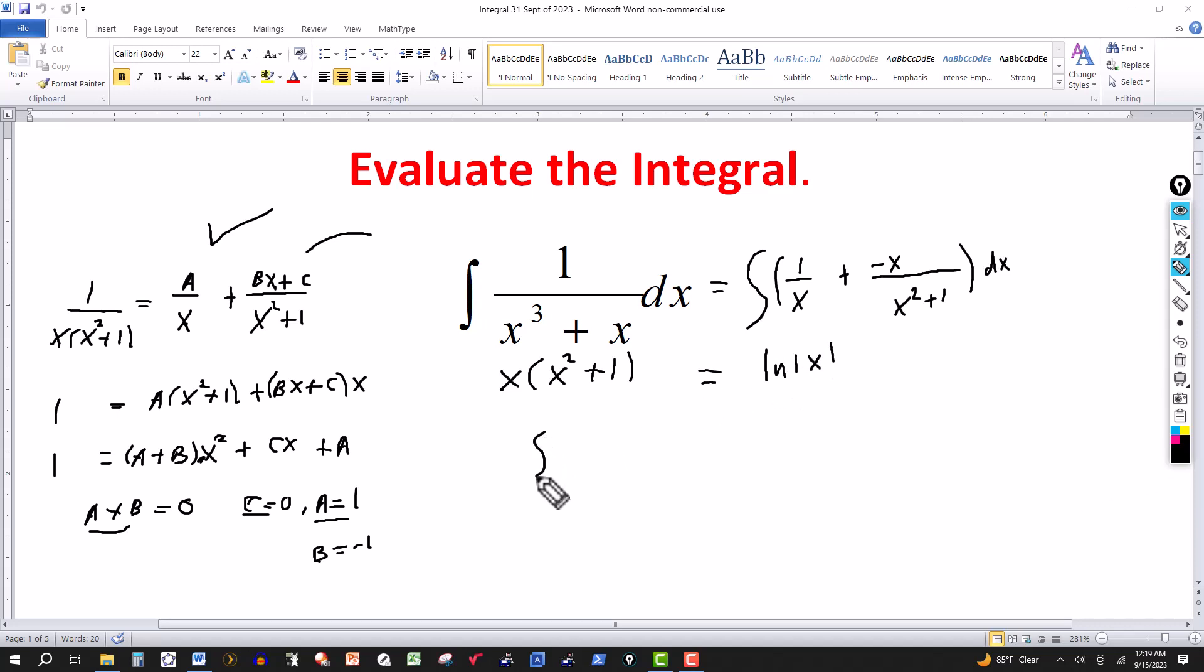And of course, the general formula for that one is du over u equals ln of absolute u plus the constant of integration. But this is just a formula, so we used it here.